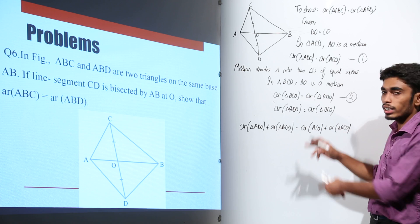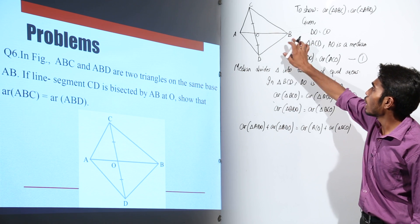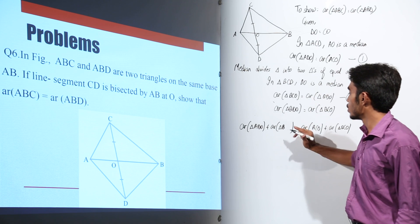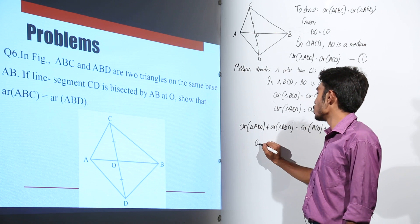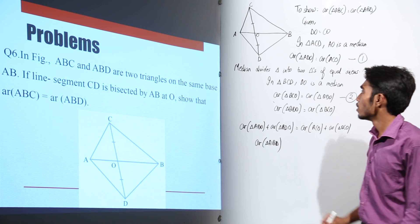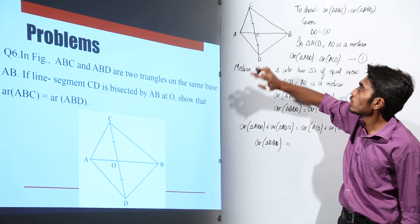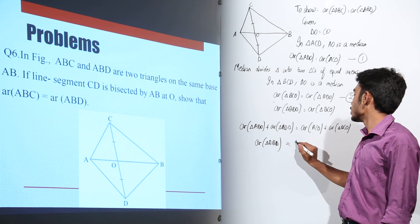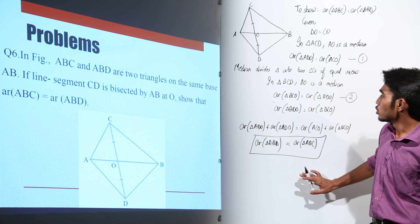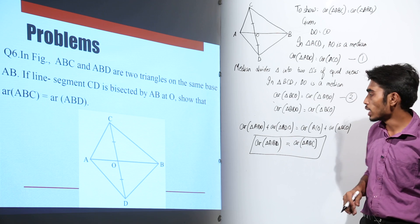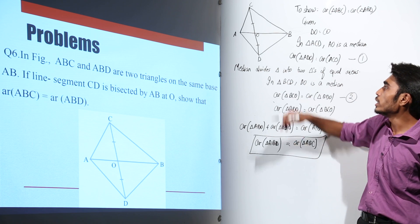You will see why I rearranged the equation — ADO and BDO add up to give triangle ABD, and ACO and BCO add up to give triangle ABC. So area of triangle ABD equals area of triangle ABC, which is what we needed to prove. Hence proved.